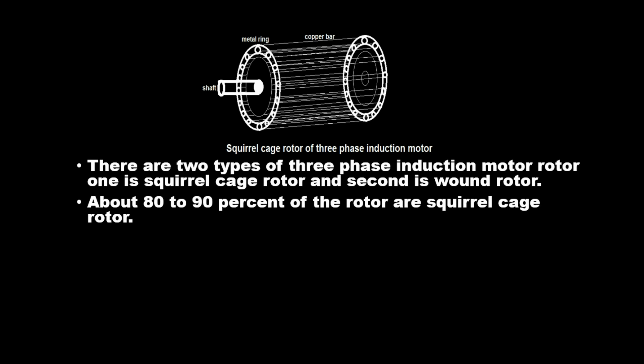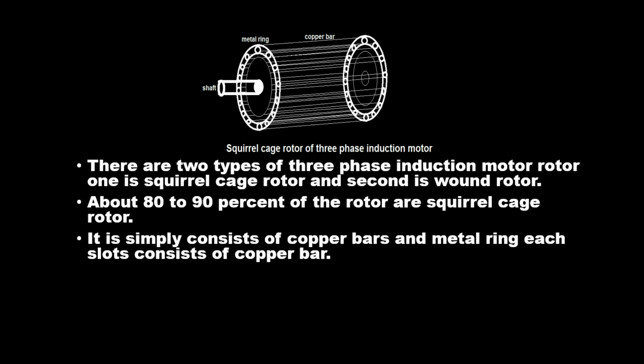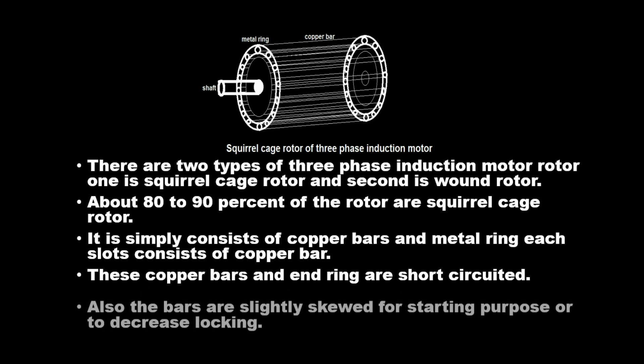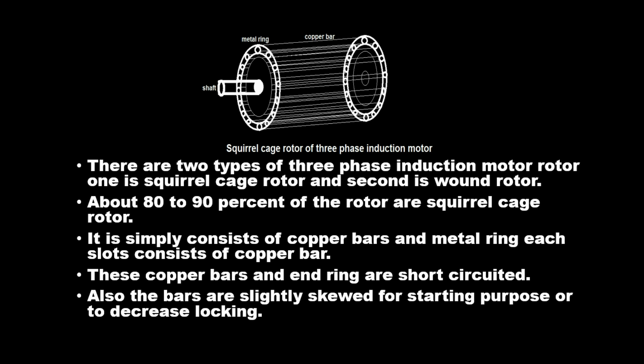About 80 to 90 percent of the rotors are squirrel cage rotor. It simply consists of copper bars and metal ring; each slot consists of copper bar. These copper bars and end ring are short-circuited. Also the bars are slightly skewed for starting purpose or to decrease locking.